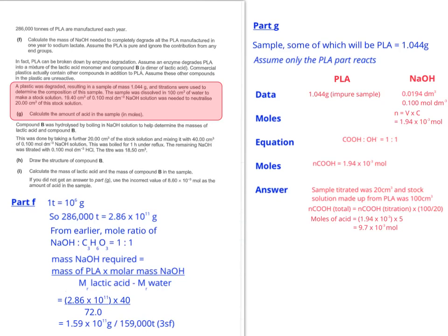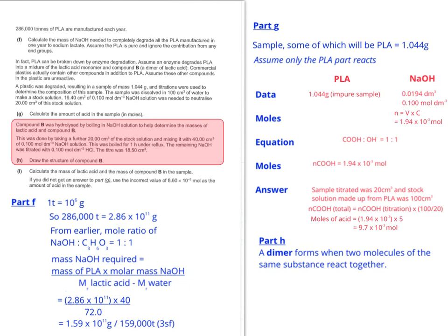Let's now think about the next part. So let's first of all go to part H and just revisit what a dimer is. So a dimer is formed when two molecules of the same substance react together. So they want us to work out the structure of compound B. Now it's not likely to be a cyclic structure.